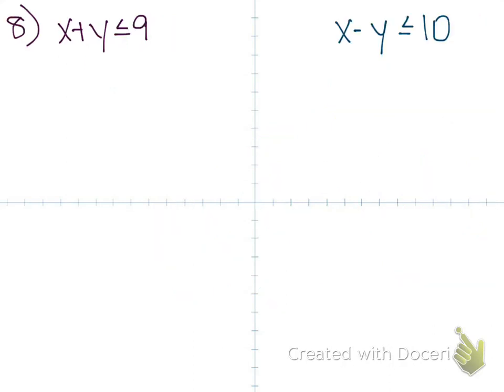Okay, so my system is x plus y less than or equal to 9 and x minus y less than or equal to 10. So I'm going to have to graph these individually. And then they'll both be solid because they both have the equal to part. And then I'll have to shade both of them. Now I wrote them side by side like this because the first thing I want to do is put them both into slope intercept form so I can graph them a little bit easier.